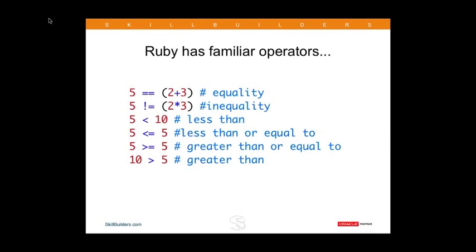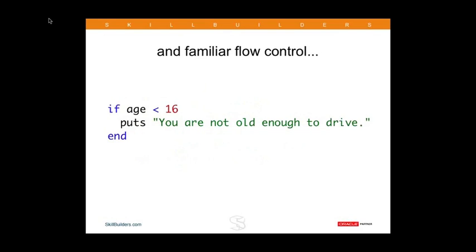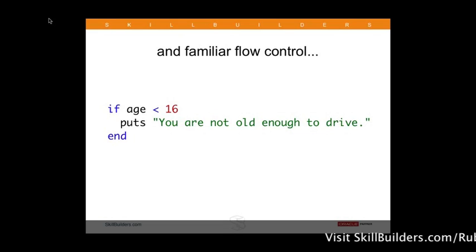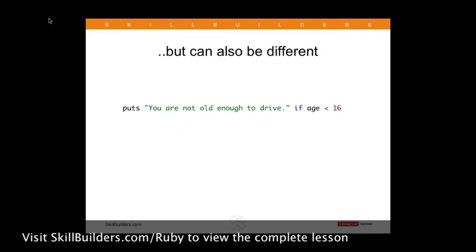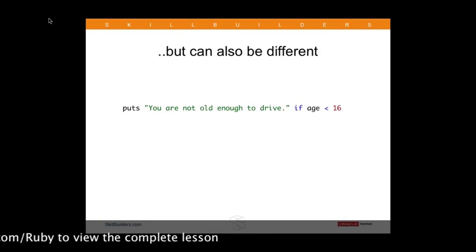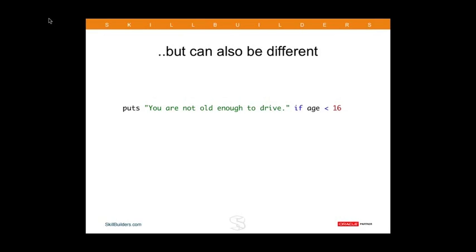Ruby has the familiar operators you see in most languages. We use the double-equal sign for equality, and we have greater than, less than, and equal to. We also have familiar flow control — if you've seen Visual Basic, it's a little like that. You don't have 'then' on the end of your statements, but you have an if and an end. We don't use curly braces, we don't use semicolons. We can also use the if statement as a predicate on the end of a statement — for example, 'you're not old enough to drive if the age is less than 16'. That comes in handy when you just need something to happen under a certain condition and you don't have an else clause.